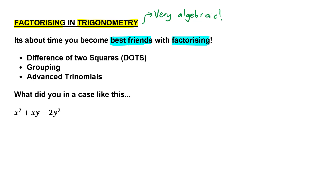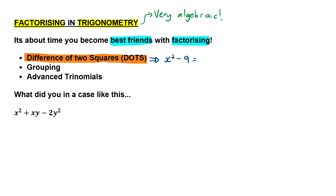The types of factorization you should be familiar with include difference of two squares — that's when you have two squared terms separated by a minus. For example, x² minus 9: x² is a squared term and 9 is a squared term, so we factorize it to be (x - 3)(x + 3).